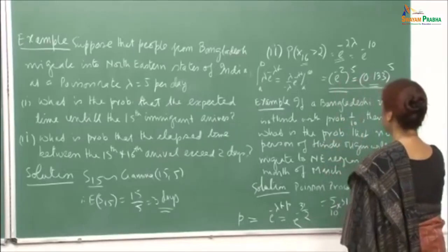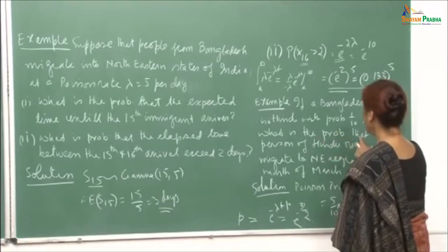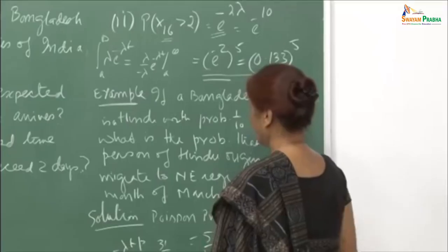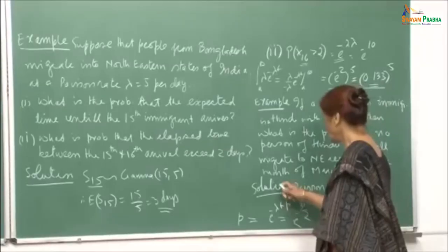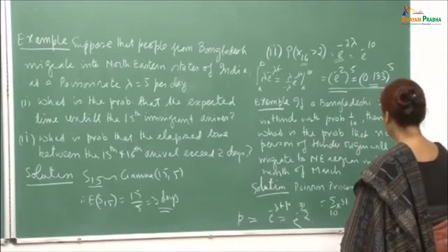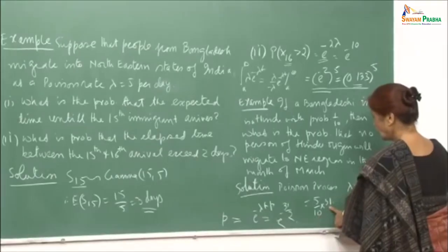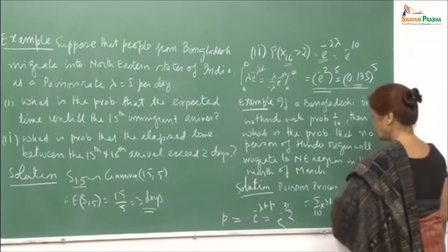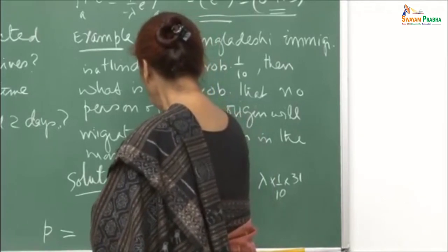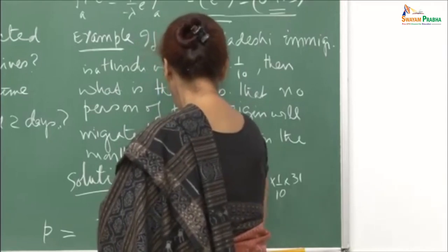If a Bangladeshi immigrant is Hindu with probability 1/10, the probability that no Hindu migrates to the northeastern region in the month of March is e^{-λpt} = e^{-5·(1/10)·31} = e^{-31/2}, since March has 31 days and the Hindu arrivals form a Poisson(λpt) process.